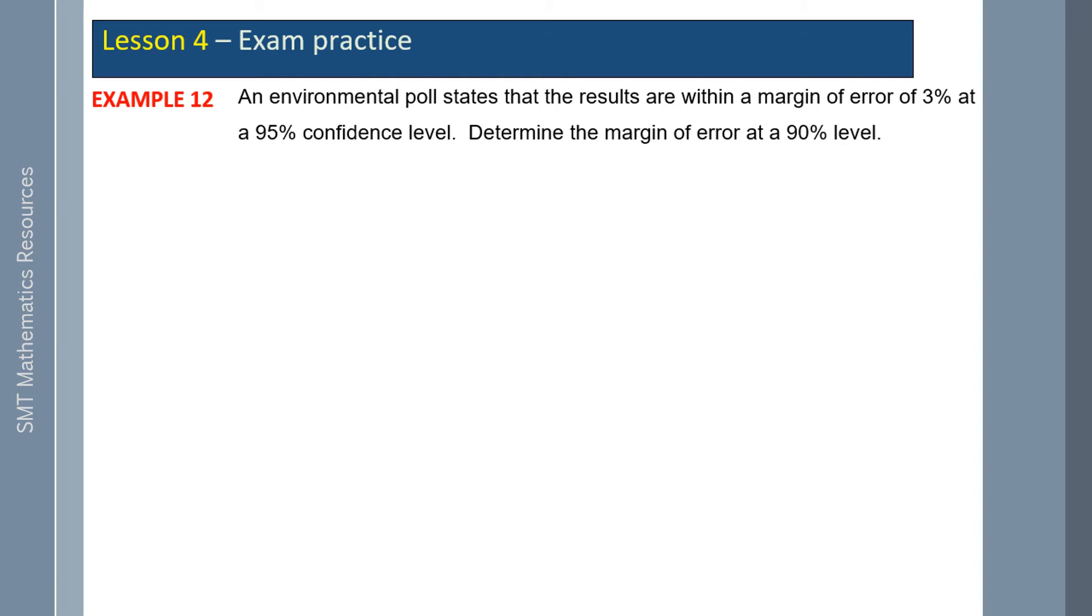The environmental poll states that the results are within a margin of error of 3% at a 95 percent confidence level. Determine the margin of error at a 90 percent level. The 3% is equivalent to 1.96 z-score, which is 95 percent confidence, times by the sample deviation. Dividing both sides by 1.96, we get that to being approximately 0.0153.